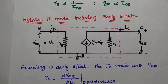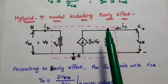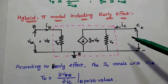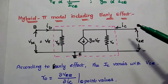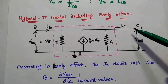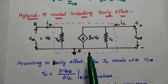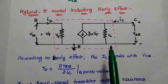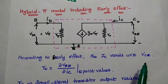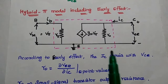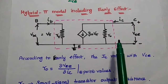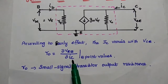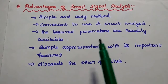Next is the hybrid pi model including the Early effect. In this method, we concentrate on the output parameters. Due to variations in the output collector current or the base-to-collector reverse bias voltage, the width of the base is affected. According to the Early effect, the collector current varies with respect to V_CE. To include this effect, we introduce one more parameter R_O, where R_O equals partial derivative of V_CE with respect to I_C at the Q point values.